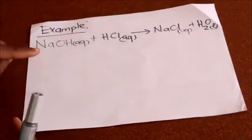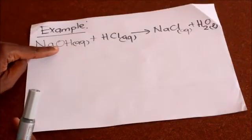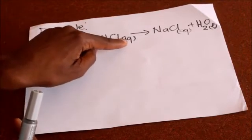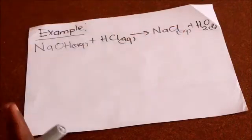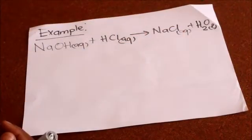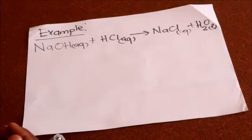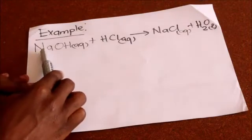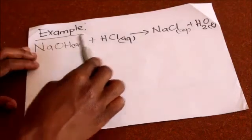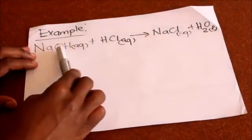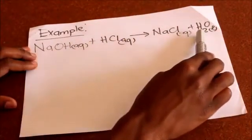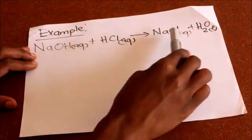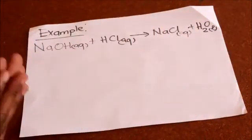Let's take an example. We are given sodium hydroxide (aq) plus hydrochloric acid (aq) to give sodium chloride (aq) plus water. The first rule says we must make sure the equation is balanced. Looking at Na atoms: one on each side. Oxygen: one on each side. Hydrogen: two on each side. Cl: one on each side. So the equation is already balanced.